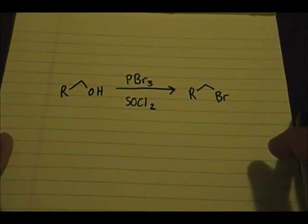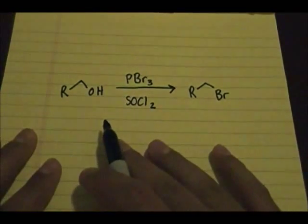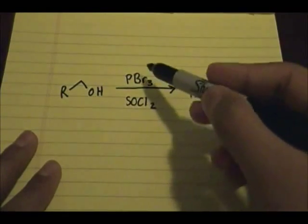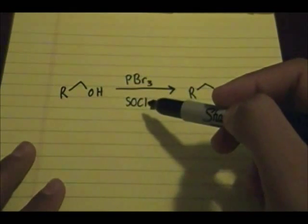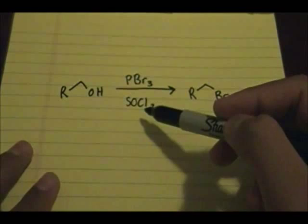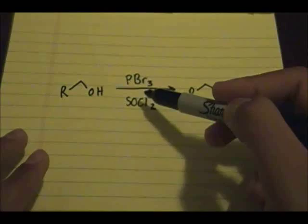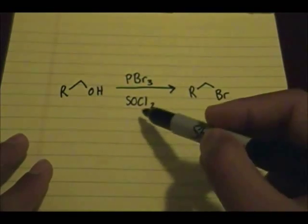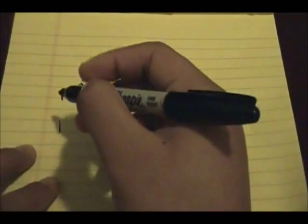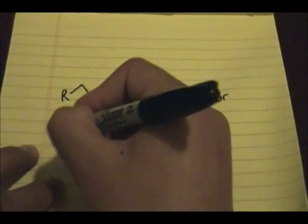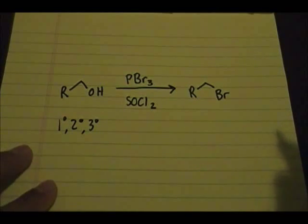The unique thing about using these reagents is that they are universal — they can apply to any type of alcohol. So you can have a primary, secondary, or tertiary alcohol, and if you use these reagents they will substitute the OH for Br. This will work for primary, secondary, or tertiary.